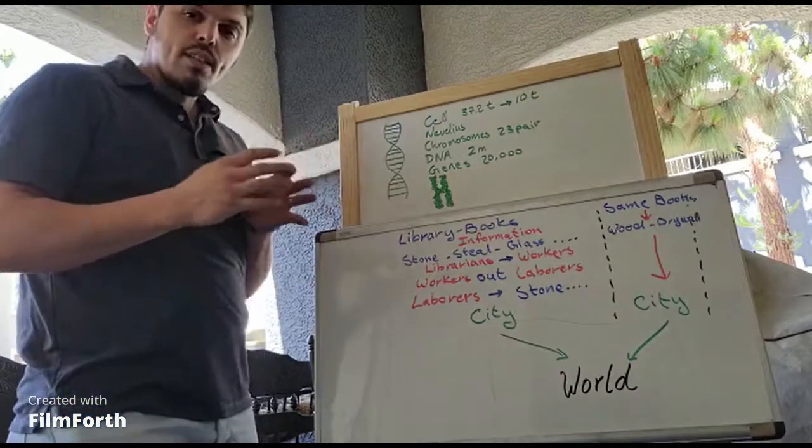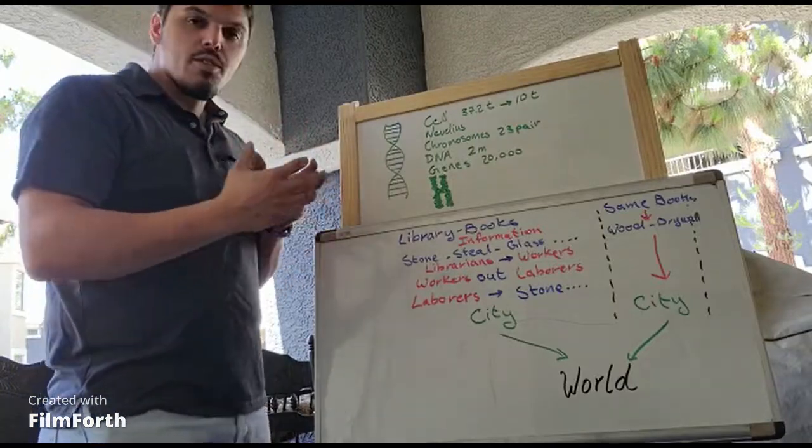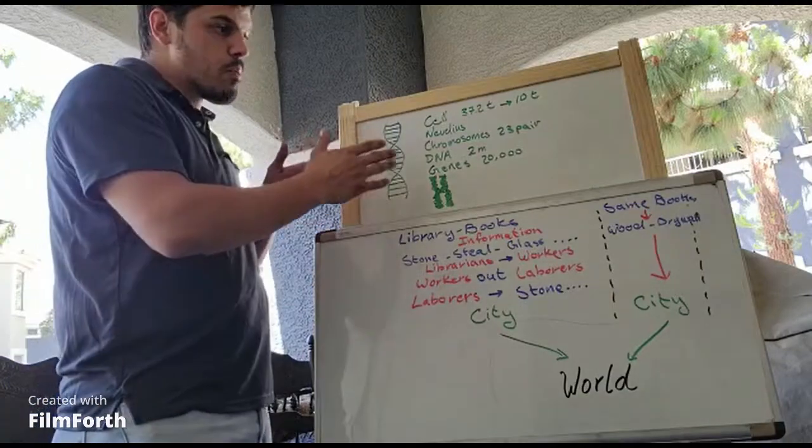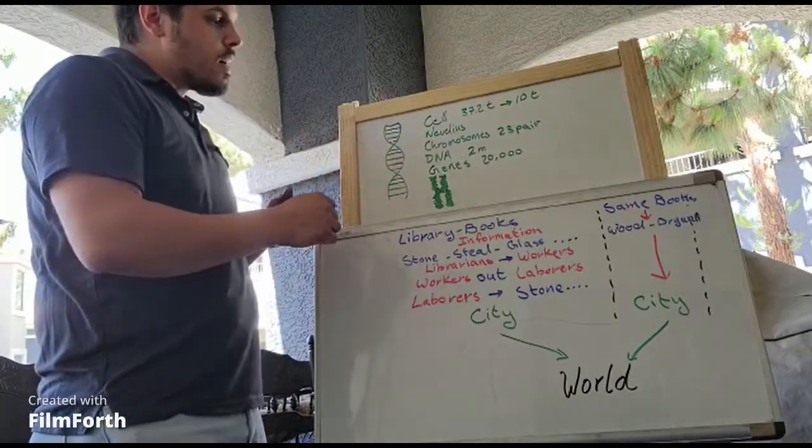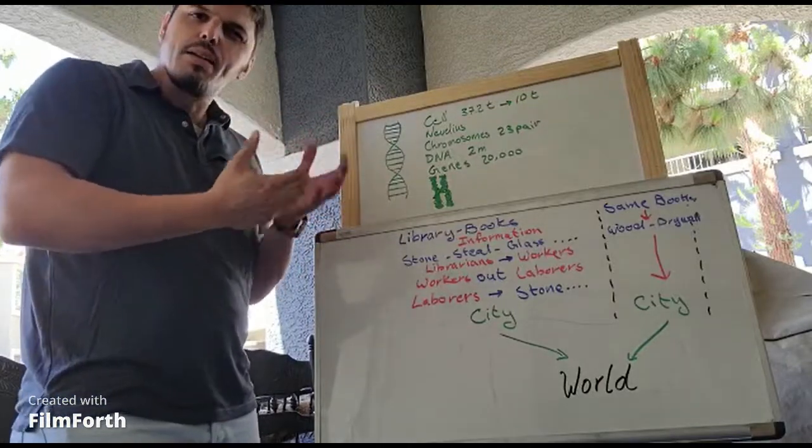So if you look at the cell, each individual cell, it's got a nucleus. Inside that nucleus, there's chromosomes. 23 pairs of chromosomes per cell. Those chromosomes are basically compiled of DNA, DNA and proteins.